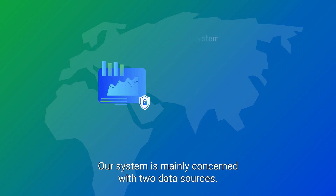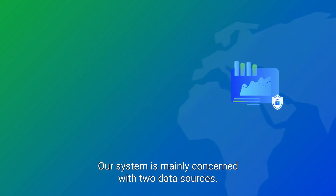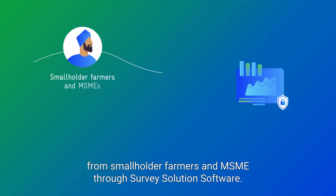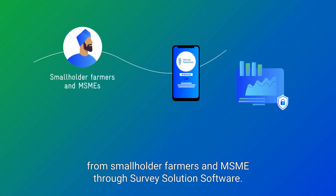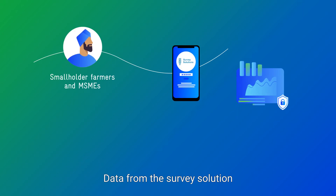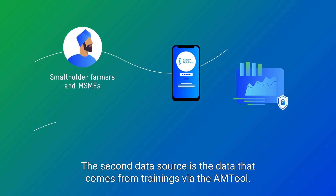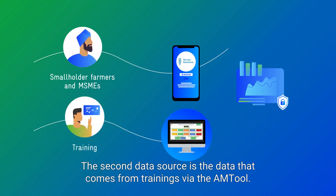Our system is mainly concerned with two data sources. The first data source is the data coming from smallholder farmers and MSMEs through survey solution software. Data from the survey solution is derived through a mobile-based application and works offline too. The second data source is the data that comes from trainings via the AM tool.